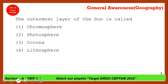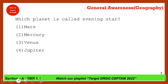The outermost layer of the Sun is called what? It is not the chromosphere. The correct answer is the corona — not the disease, but the corona, which is the thin outermost layer of the Sun.